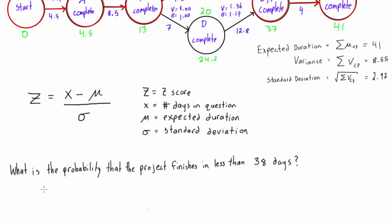All we do is calculate our z-score. Let's fill in our equation. We have z will be equal to x, this is the number of days in question. So that will be 38 in this case, 38 minus mu, which is our expected duration. So that's 38 minus 41, over our project standard deviation, which was 2.92. If you just punch that in your calculator, you get a z-score that is negative 1.03.